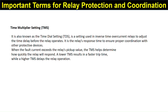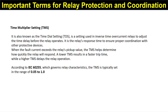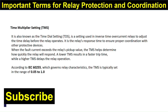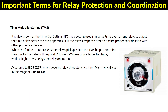A lower TMS results in a faster trip time while a higher TMS delays the relay operation. According to IEC 60255, the TMS is typically set in the range of 0.05 to 1. On the relay, you can adjust the TMS setting using the dial shown here.